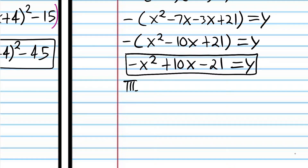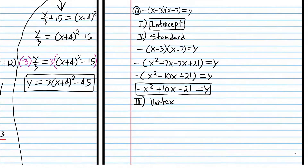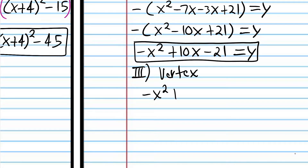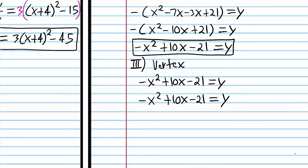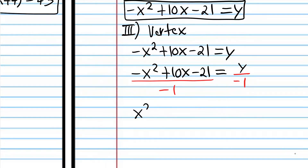Starting with standard form, we're going to complete the square. We can't have a coefficient on the x squared term, so we're going to divide both sides by negative 1. Really, all that does is change all the signs on the left side of the equation. Now we're going to put the 21 on the other side and then complete the square.